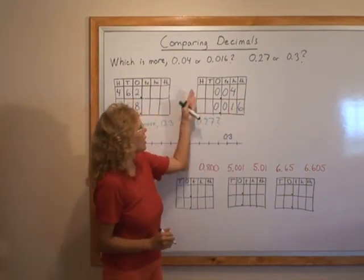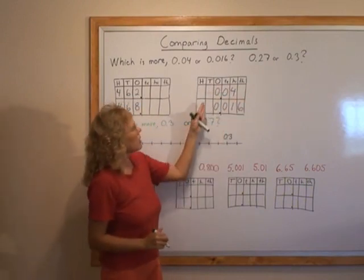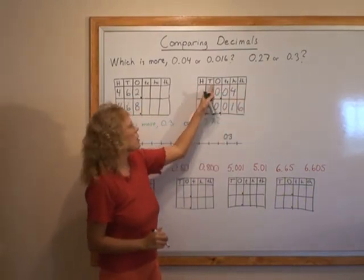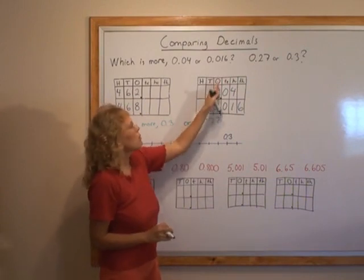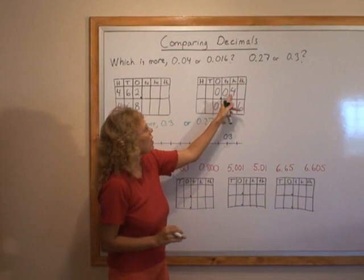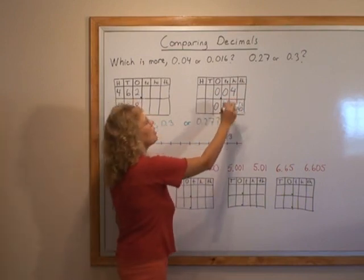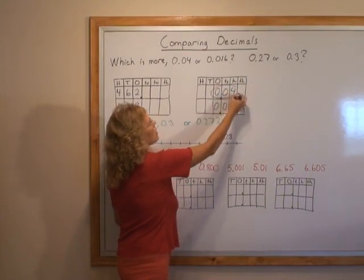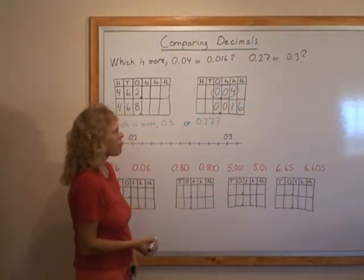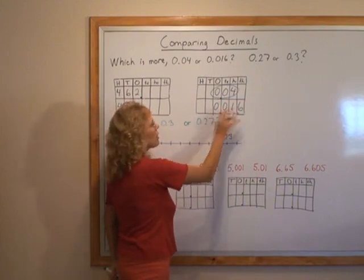But the other number is like this. Now when we compare, starting with these units, going over to the right, we see that they have the same amount of hundreds, same amount of tenths, none, and then here, this number has more hundredths than this one. So therefore, this is the bigger number. And the thousandths, they don't count when this one was already more than this.